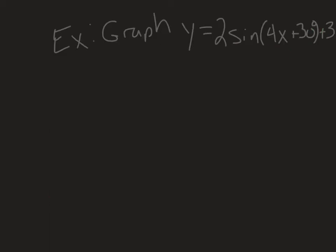Before we talk about cosine, let's go through an example where we are graphing a sine function. I'm going to make a list: amplitude, period, horizontal shift, and vertical shift. Starting with the vertical shift — it's going to move it up 3. The horizontal shift is positive, so it's going to move it left 30 degrees.